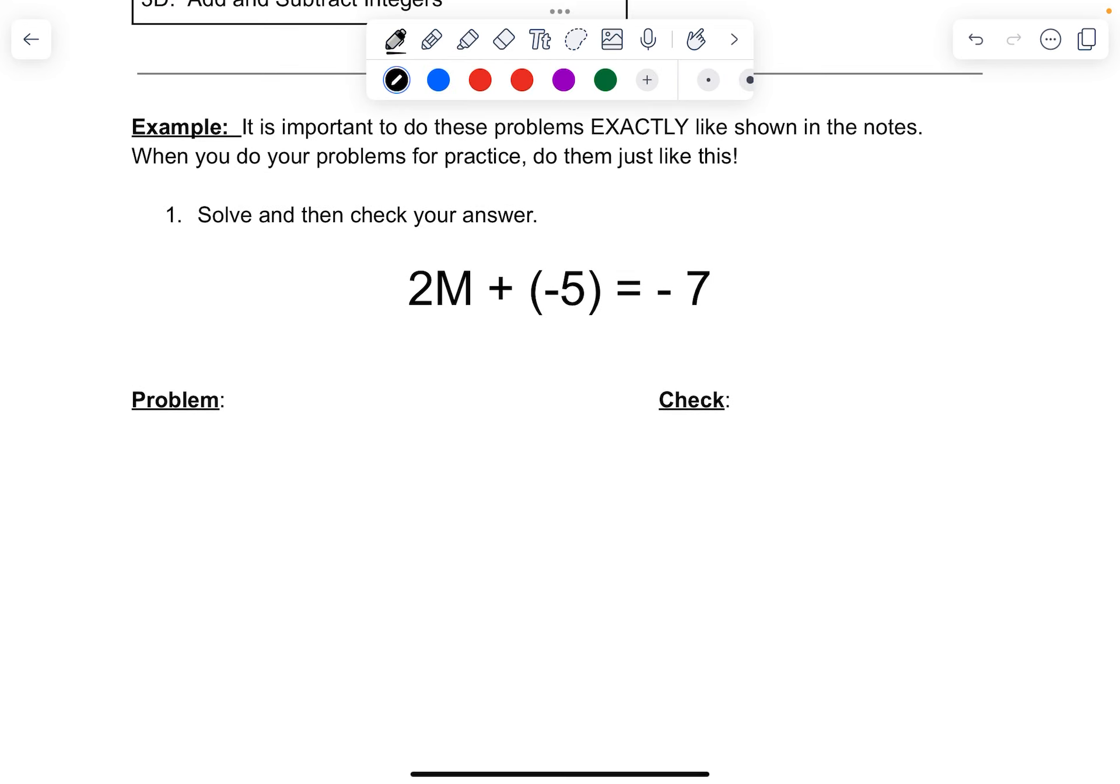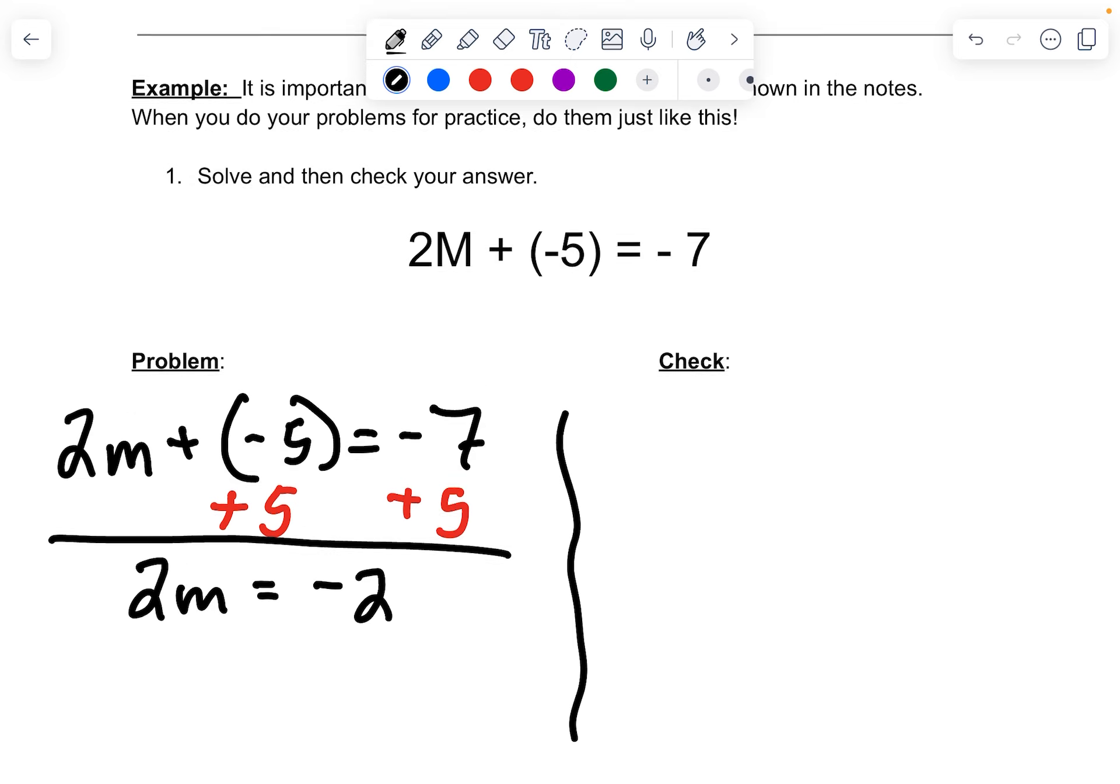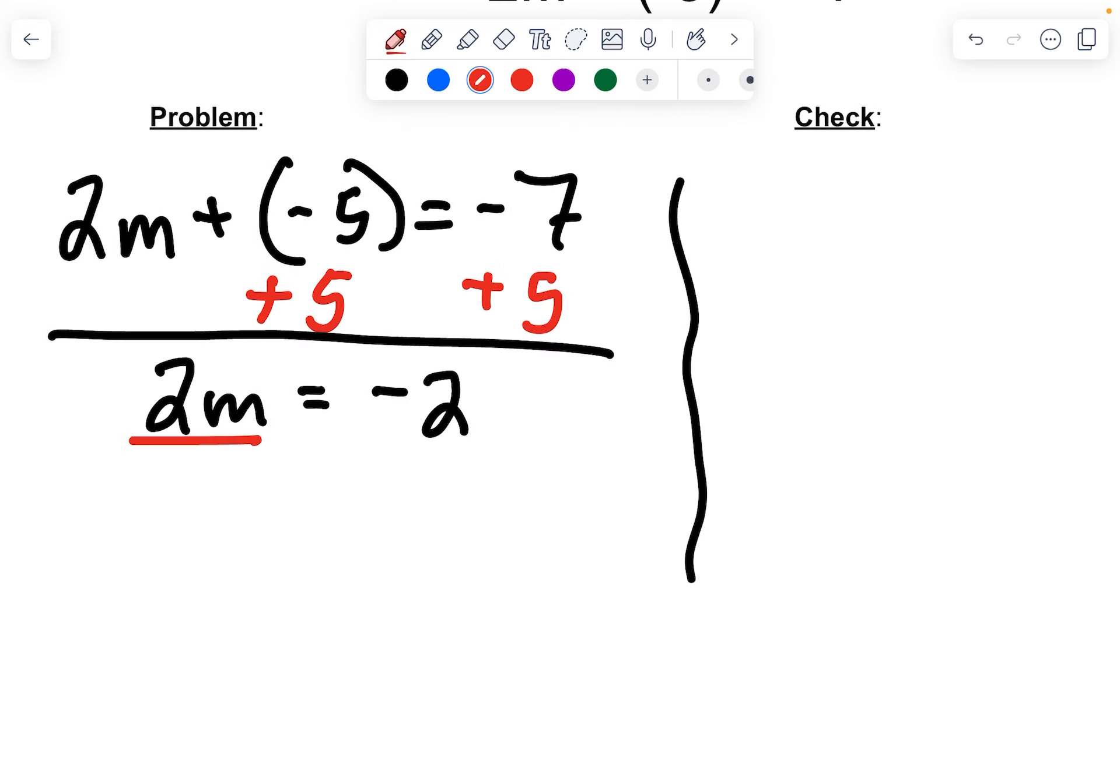Let's move on to the first problem. We're going to write it like we've done in the past. Okay, and we want the m by itself, so I need to get rid of the negative 5. I'm going to add 5 because I add the opposite. And I end up with 2m equals negative 2 because negative 7 plus 5 gives me negative 2. I'm going to divide both sides by the number in front of the variable, which is 2. And I end up with m equals negative 1.